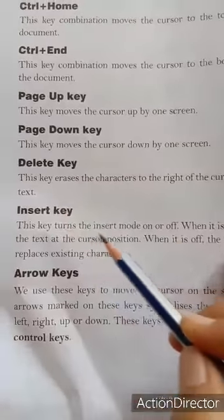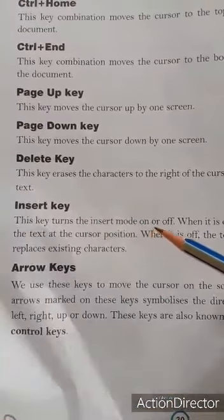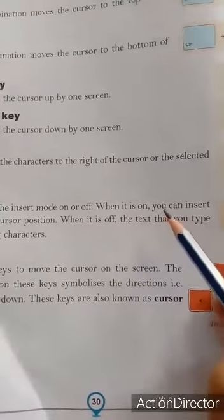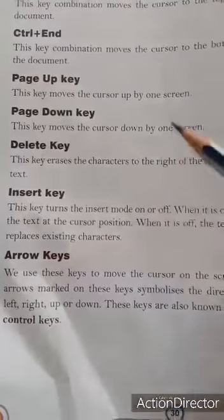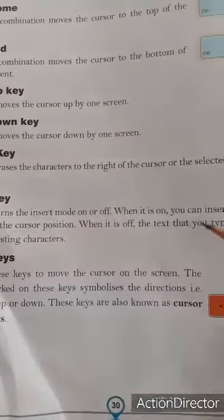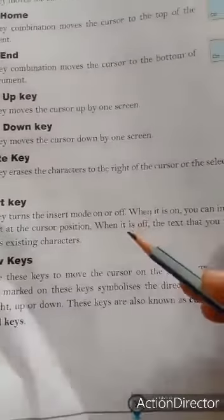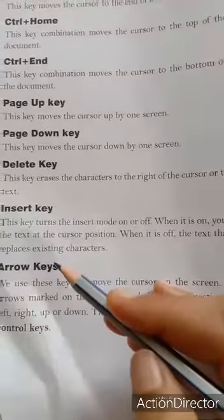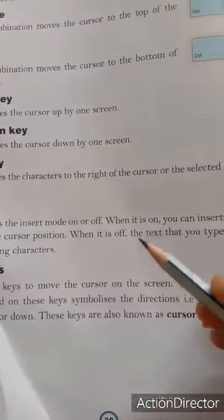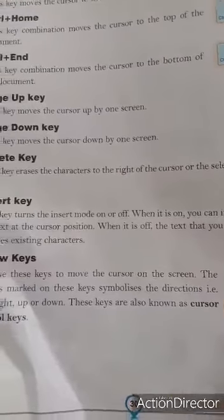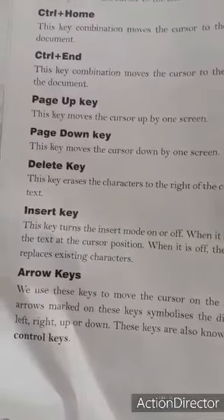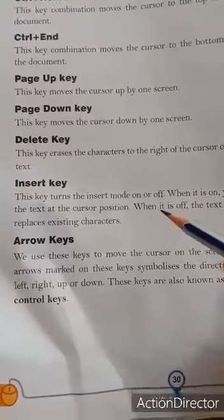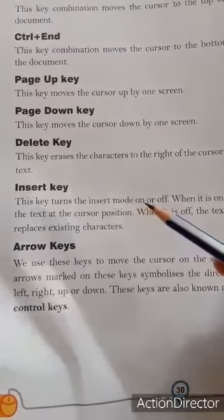Next is Insert key. Insert key: this key turns the insert mode on or off — यह key insert mode को on या off करता है। When it is on, you can insert text at the cursor position — cursor जिस place पर है वहाँ पर आप text को insert, put, या type कर सकते हो। And when it is off, the text that you type replaces existing characters — अगर insert key off mode में है तो आपका typed text already जो characters हैं उनको replace कर देता है।